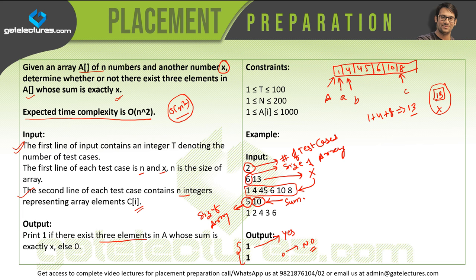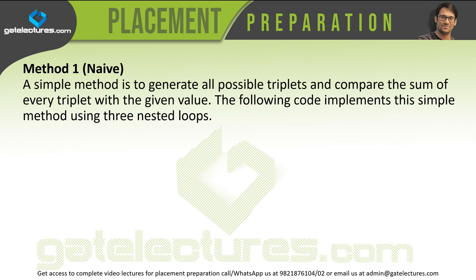Now let me show you the possible solutions to this problem. The first solution is the naive algorithm — the most basic algorithm possible. It says a simple method is to generate all possible triplets and compare the sum of every triplet with the given number. The following code implements this approach.